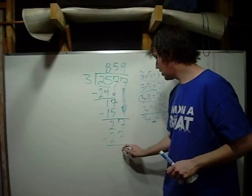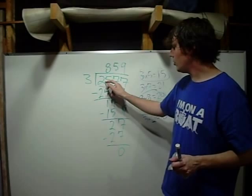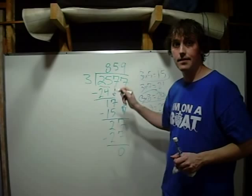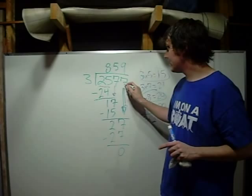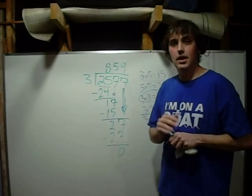You're going to subtract. When you subtract it, you're going to get 0. So, 2,577 divided by 3 equals 859. Or, you can say it, 3 goes into 2,577 859 times.